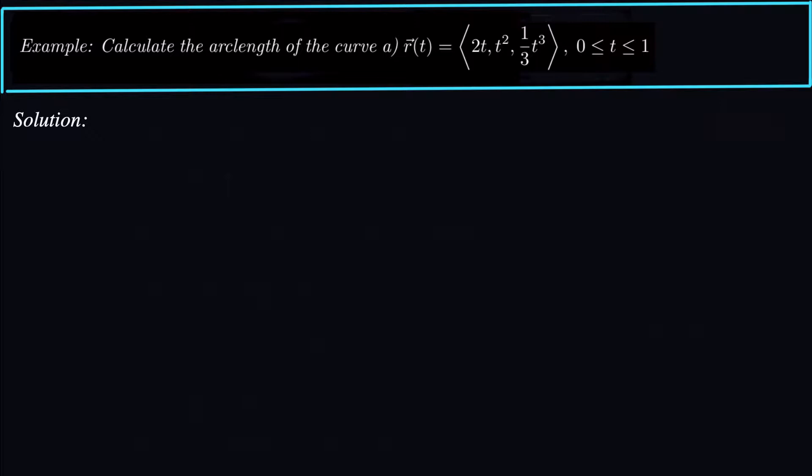So integrating this is going to be pretty straightforward. We just have to see the tricks along the way. To get the arc length of a curve, we have to remember the formula. The formula is S equals the integral, in this case from 0 to 1, magnitude R prime of t dt.